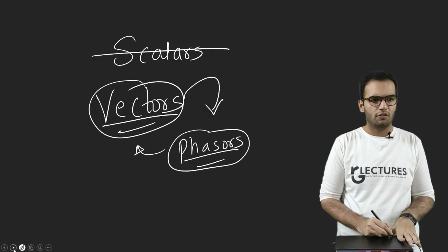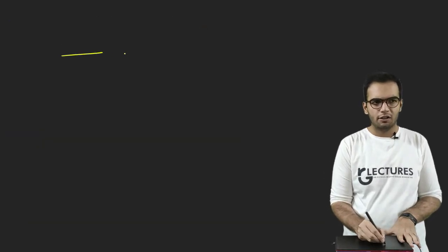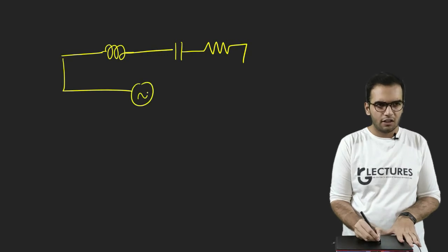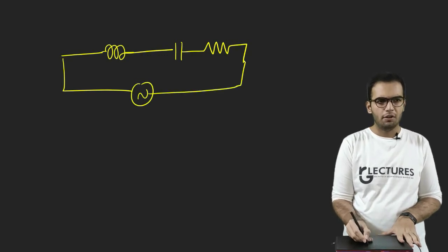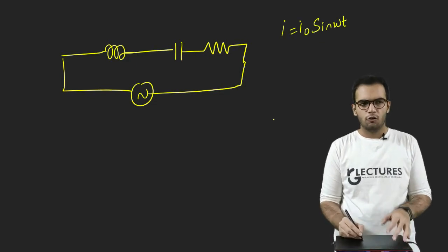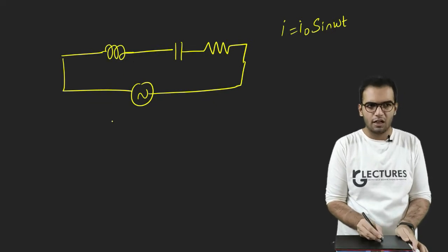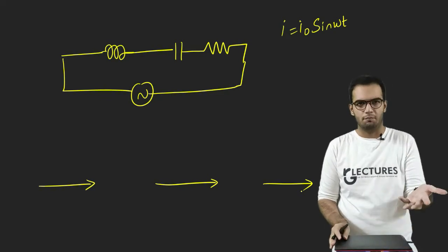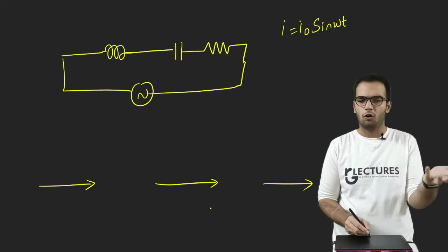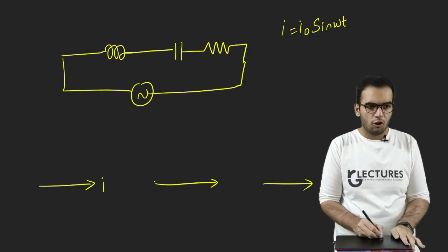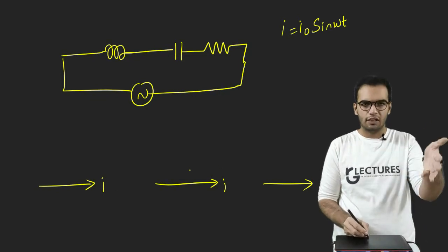Rules 2 and 3 will be covered in videos on simple circuits. Basically, in an LCR series circuit, everything is connected in series, so the current is the same. Suppose the current is I = I₀ sin(ωt) — current will be the same through all three elements. So if I draw the phasor diagram, current is drawn on the x-axis because it is the same, and I draw the voltages on the y-axis accordingly. This is what rule 3 states — draw the current on the x-axis in an LCR series circuit.